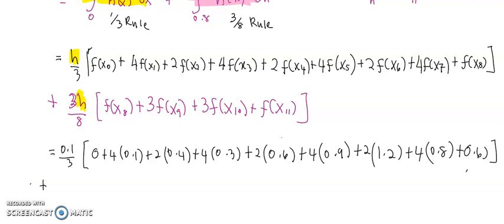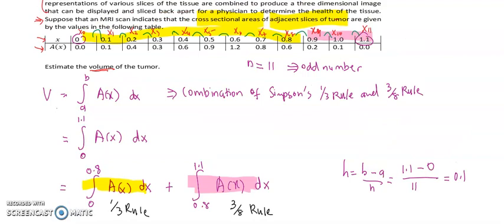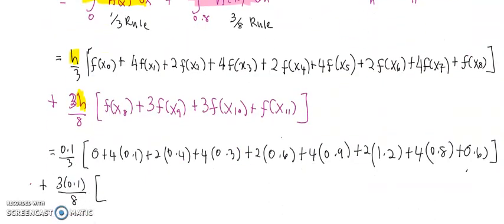Then plus 3h/8, which is 3(0.1)/8, times [f(x8)... so the area when x equals 0.8 is 0.6, so f(x8) = 0.6, plus 3f(x9) where f(x9) = 0.2, plus 3(0.1) plus 0].